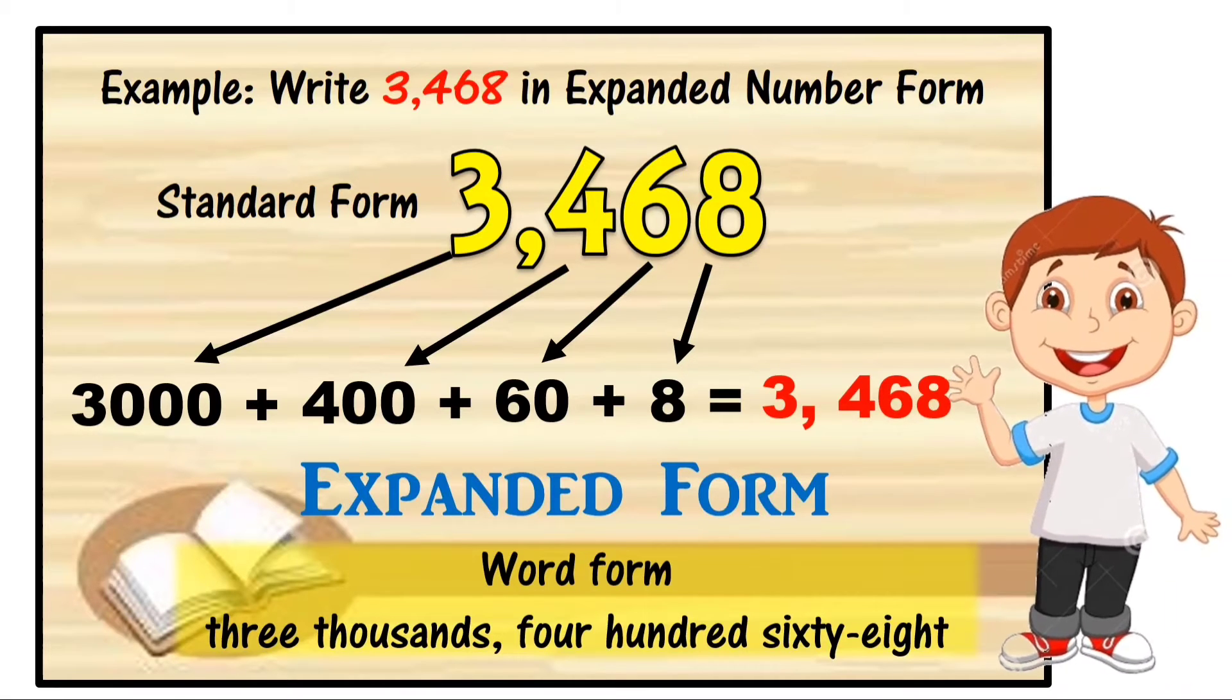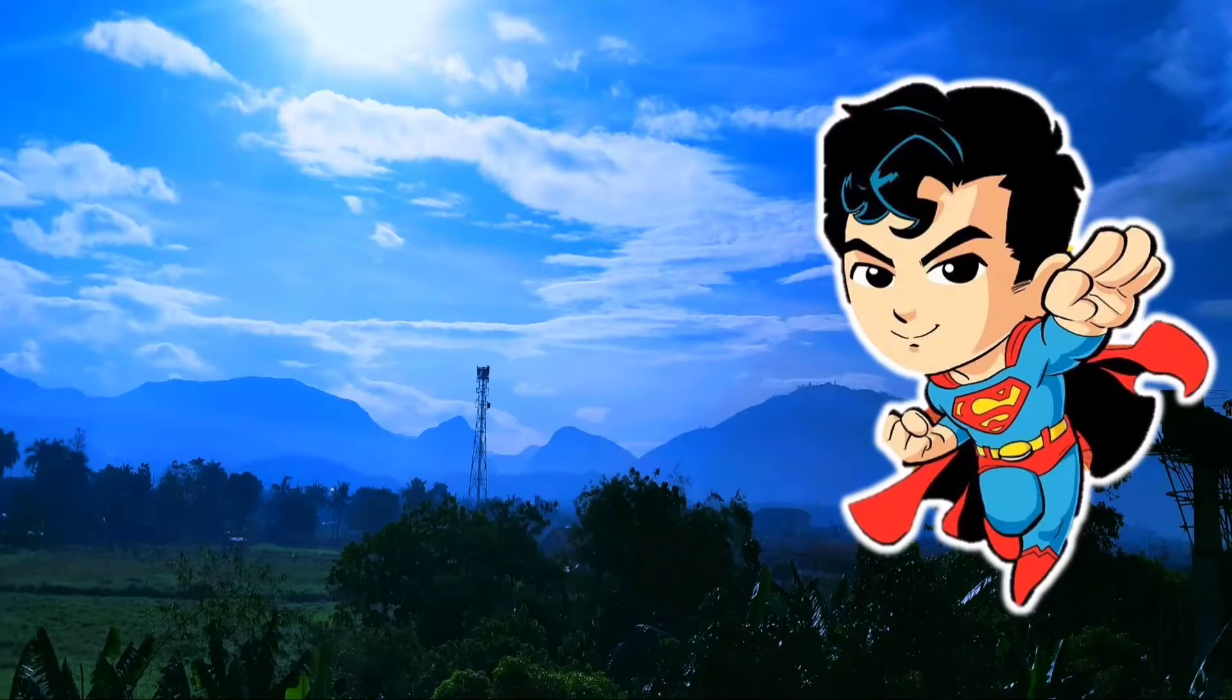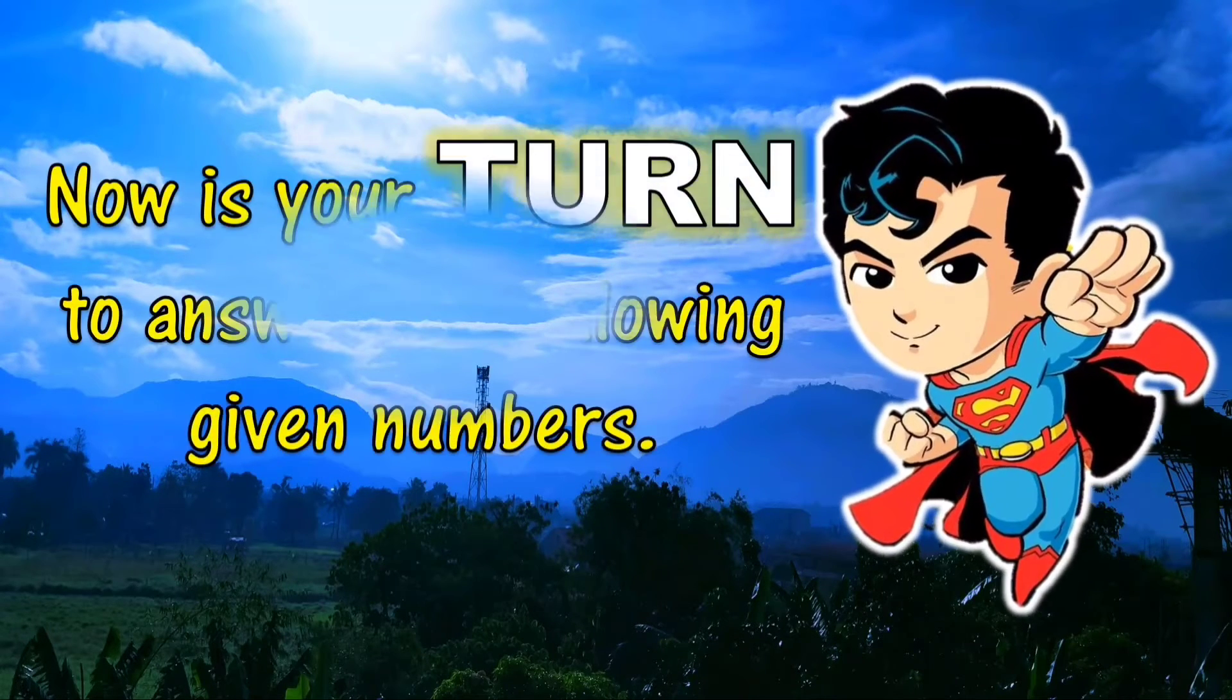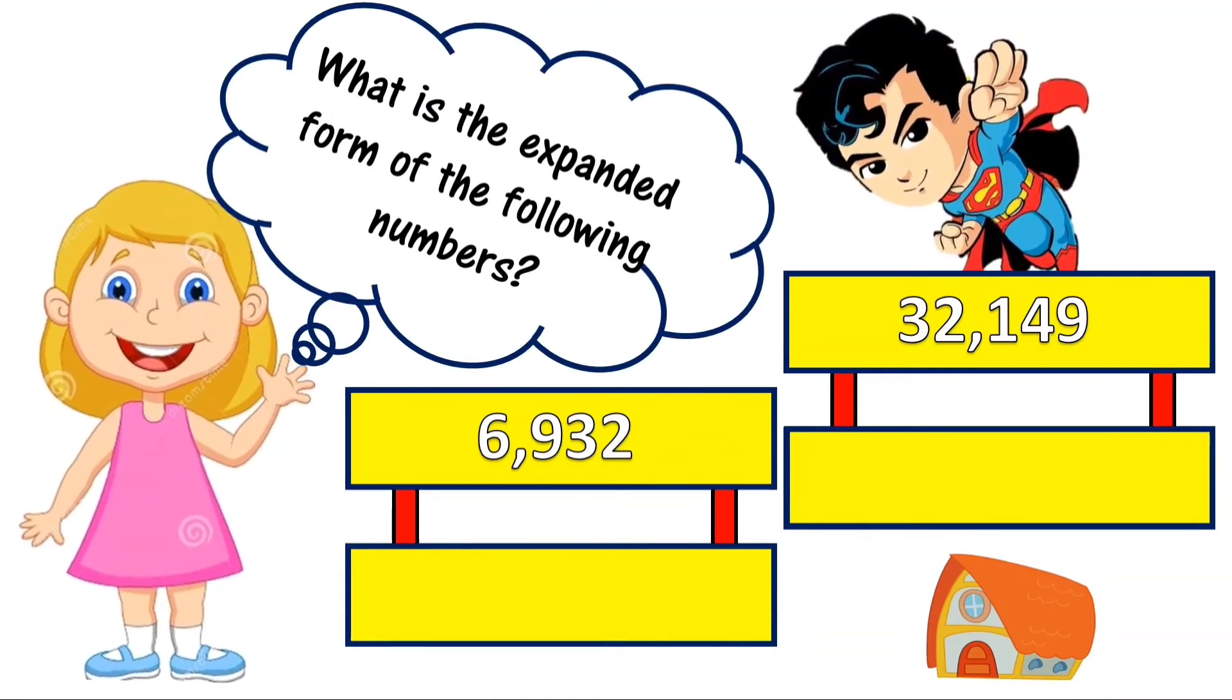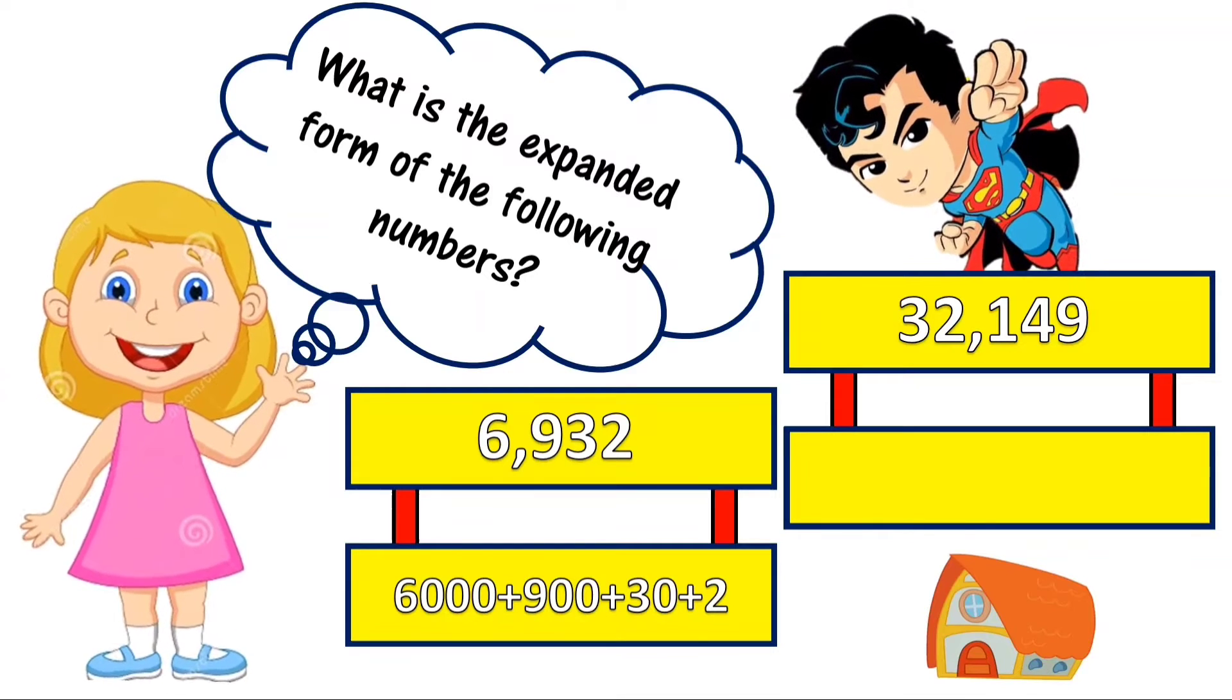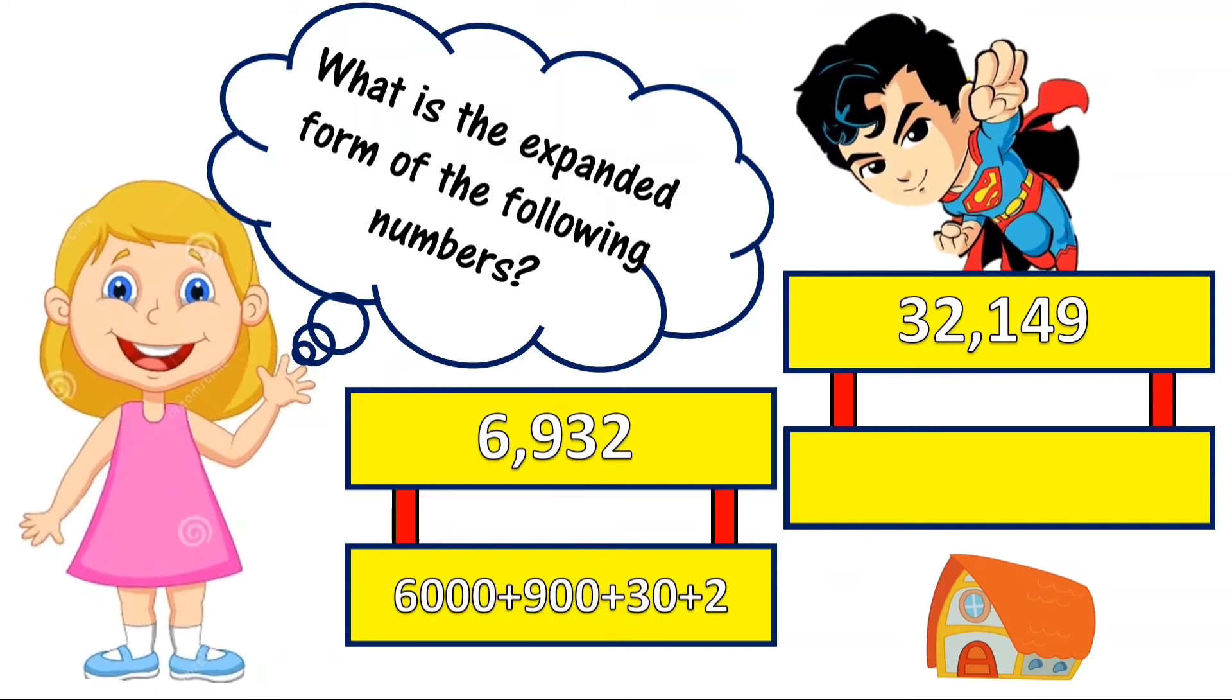The number 6,932 can be expressed as 6,000 plus 900 plus 30 plus 2 equals 6,932.